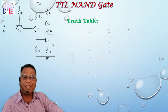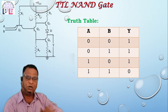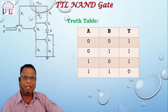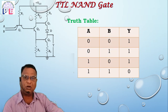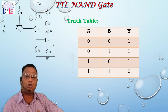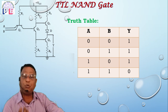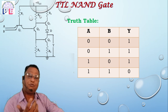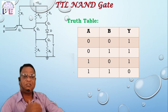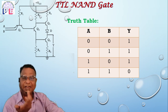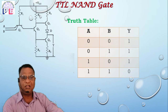To summarize the truth table: when inputs A and B are 0-0, output is 1; when A and B are 0-1, output is 1; and when inputs A and B are both 1, output goes to 0. That is the NAND gate. So friends, that is the TTL NAND gate.